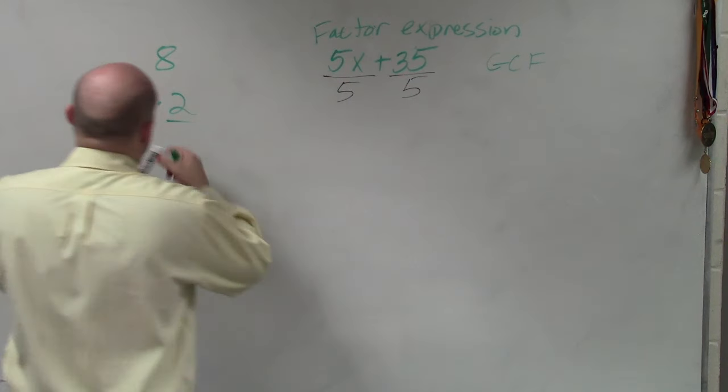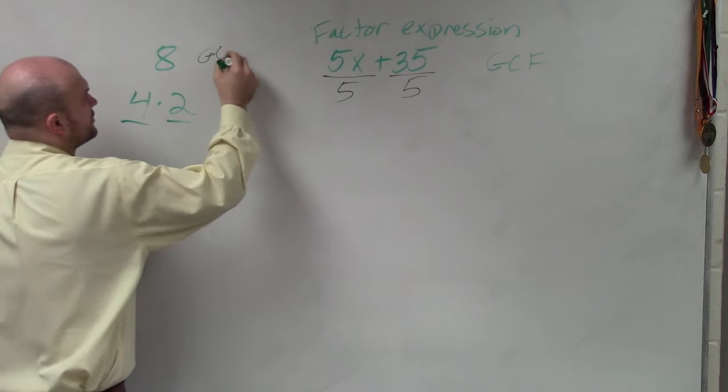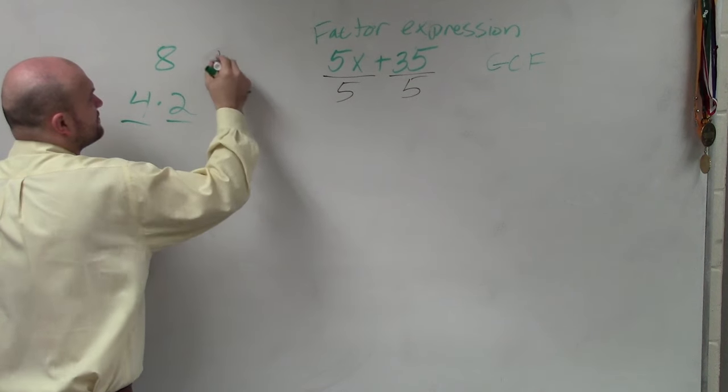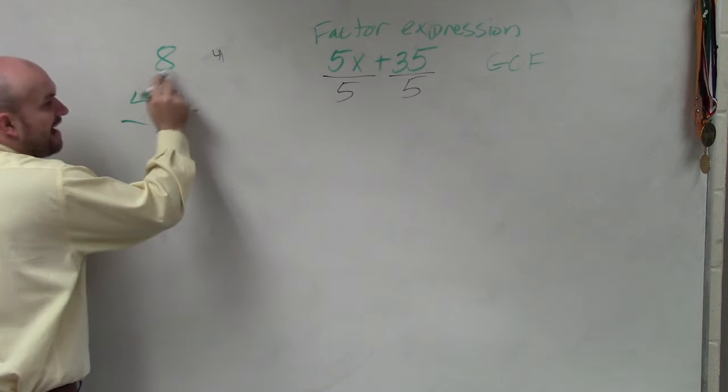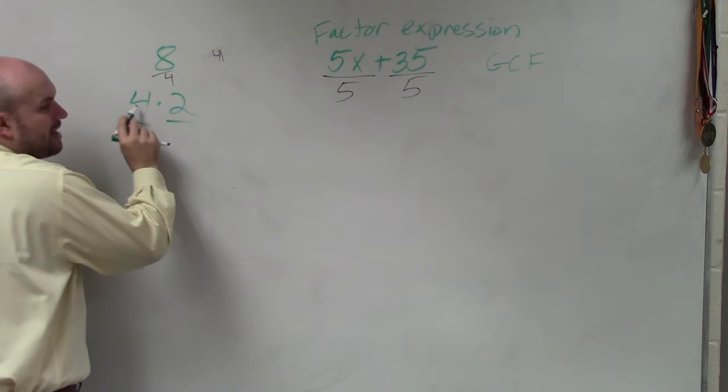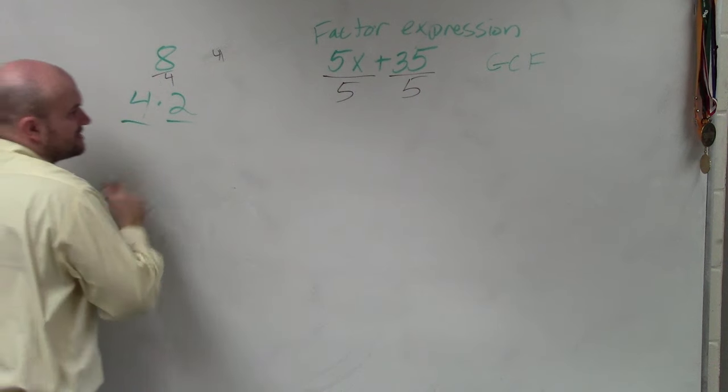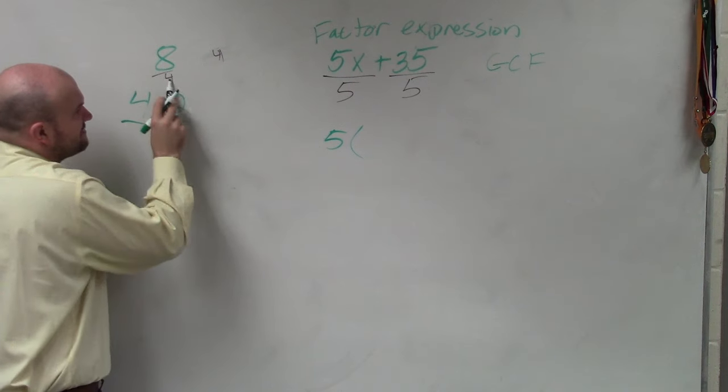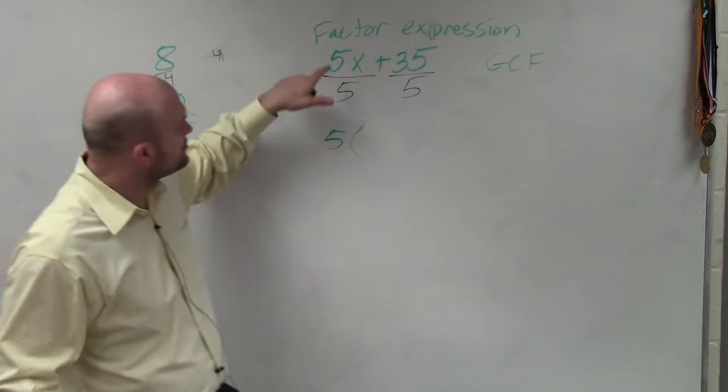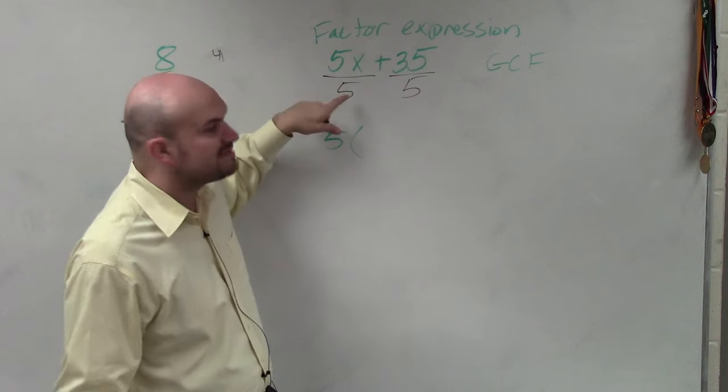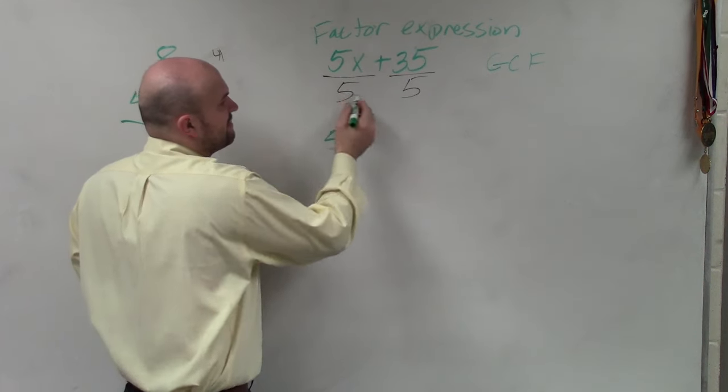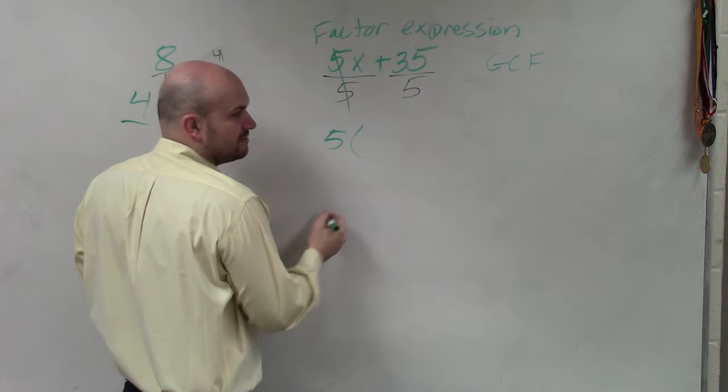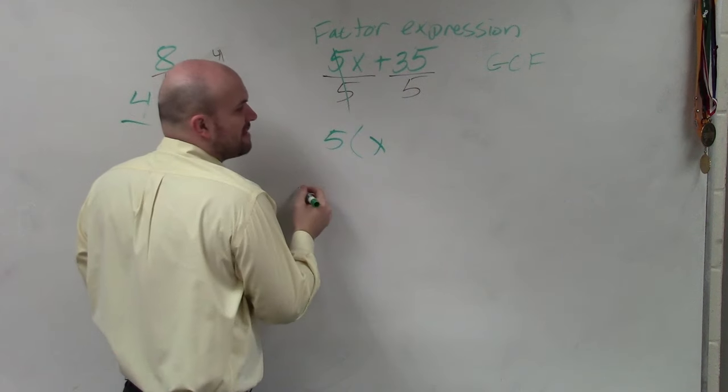So just like I said here, a factor was 4. I now divide by 4, rewrite what my divisor was here. So I say 5 times. Now once I take 8 divided by 4, I got 2. Well, what happens when I divide 5x plus 35 by 5? 5x divided by 5 gives me x. 35 divided by 5 gives me...?